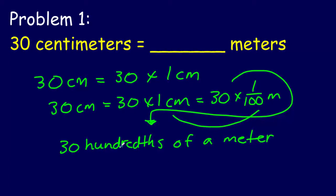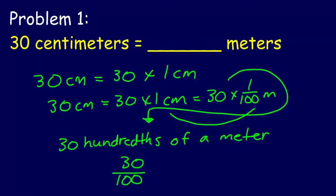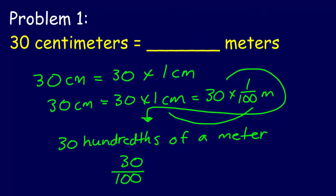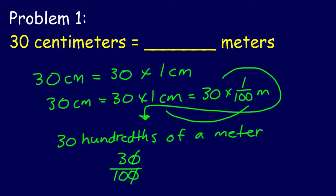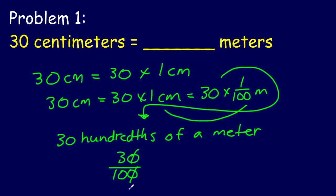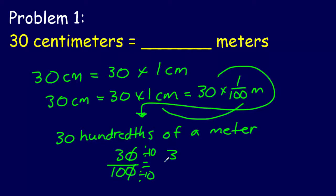So let's go ahead and write this as a fraction: 30 over 100. Now, can we express this in simplest form? We can divide out a power of 10 — dividing by 10 in the numerator and by 10 in the denominator — and we end up with 3 over 10. Our new unit of measure is meters. Does our answer seem reasonable? It does. Three tenths of a meter is the same as 30 out of 100. We thought it was going to be less than a half meter, and three tenths is less than one half. That's a way of checking our thinking.